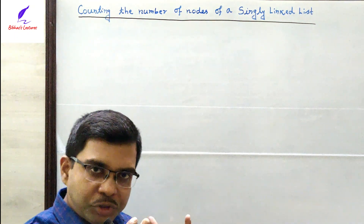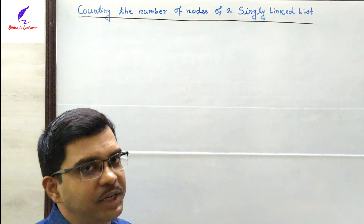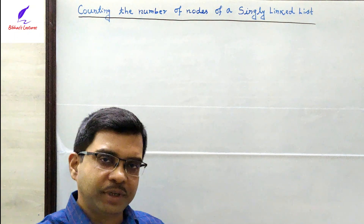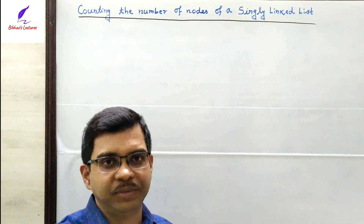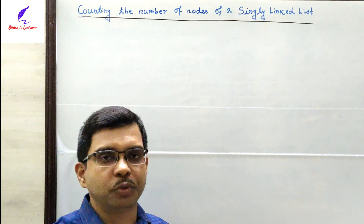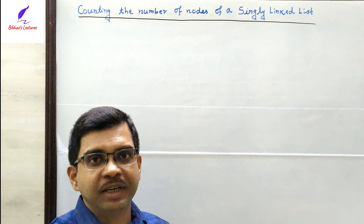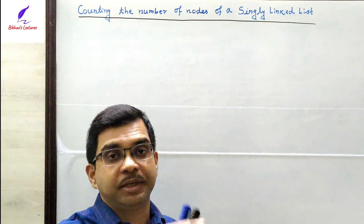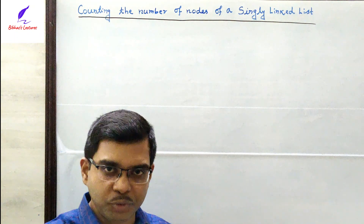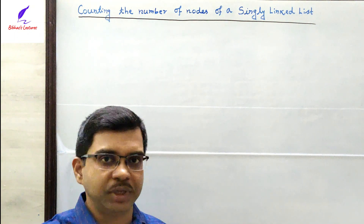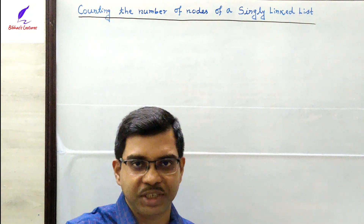Whenever you are going to implement the count function for a singly linked list, you may have to assess two kinds of situations. Case number 1: suppose the list is empty. If the list is empty, that means there are no nodes present, so it will return a value of 0. And case number 2: if the list exists, then we have to count how many nodes are there. So one by one, we will consider both cases.